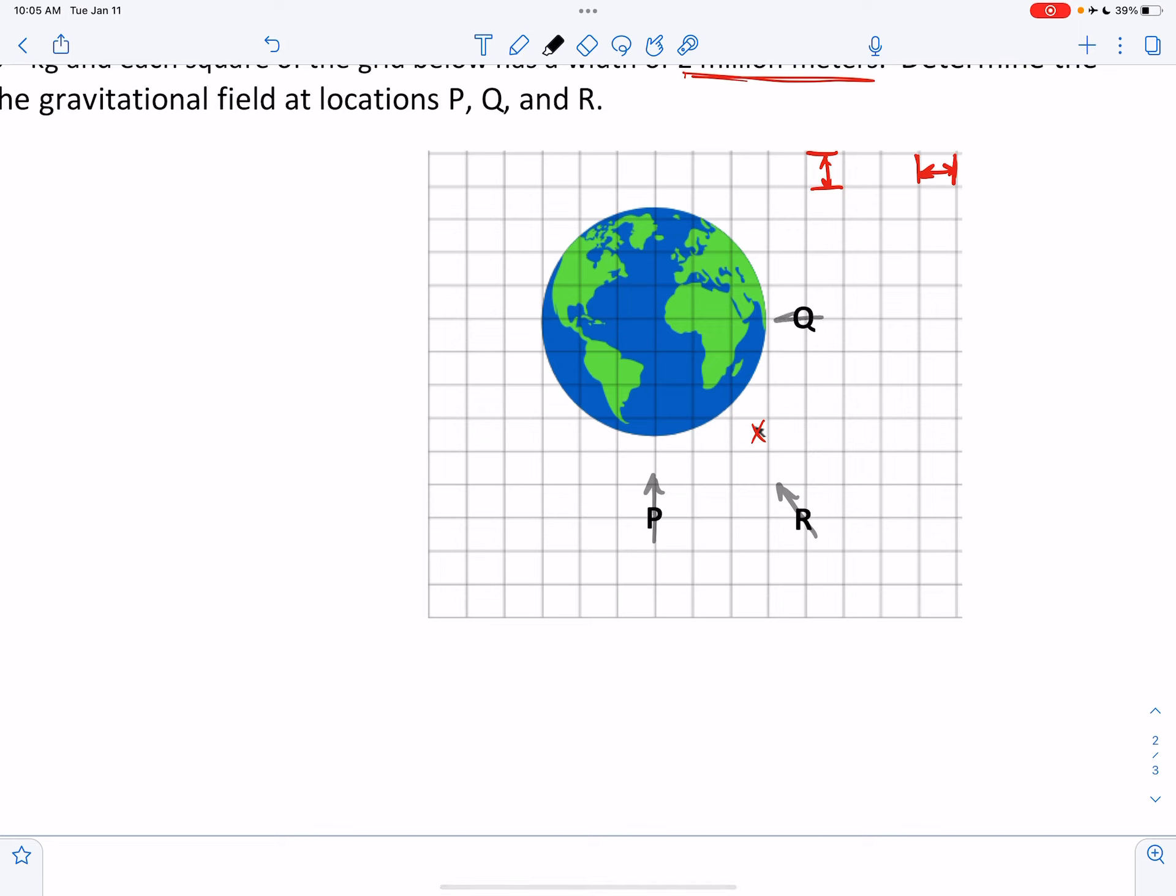Okay, and that would continue all the way around the Earth. The gravitational field is pointing towards the center of it. So we've got the direction of the gravitational field at P, Q, and R. But now let's actually calculate the strength of the field at those locations.